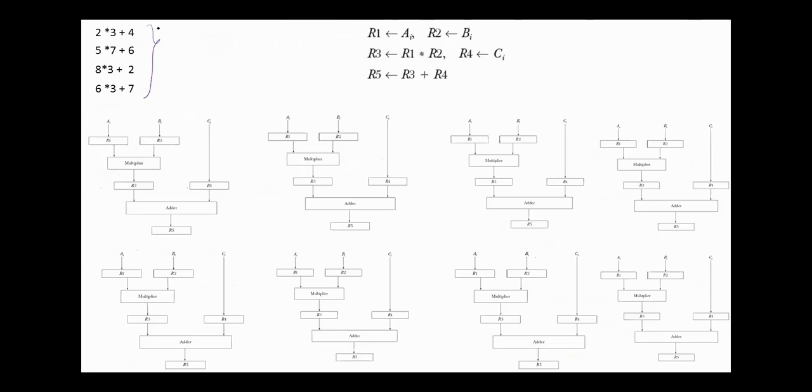Suppose, for example, that we have the following stream to be calculated using the pipeline. At the first stage, we have here 2, here 3 and here 4. Next, 2 is multiplied by 3. Here we'll have 6 and 4 here. And at the same time, we'll have here 5, the next stream, 7 and 6.